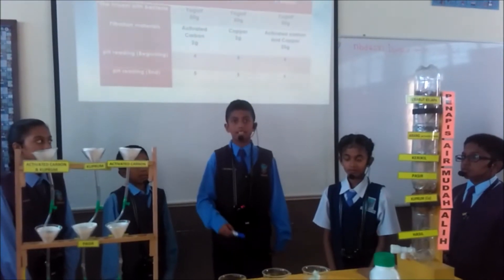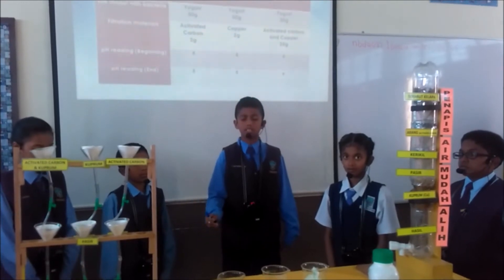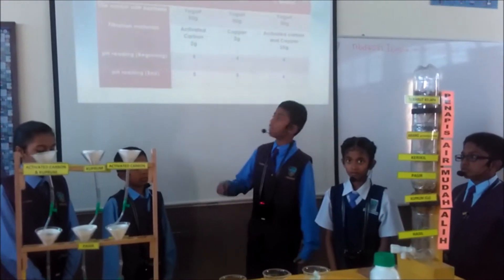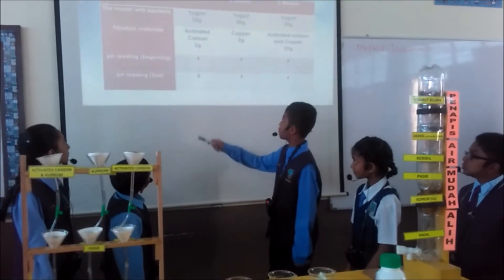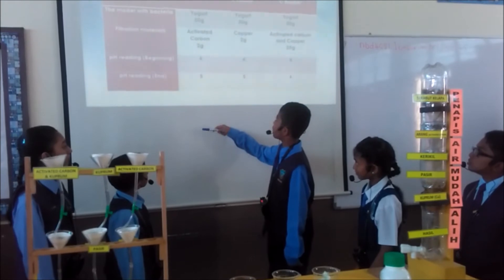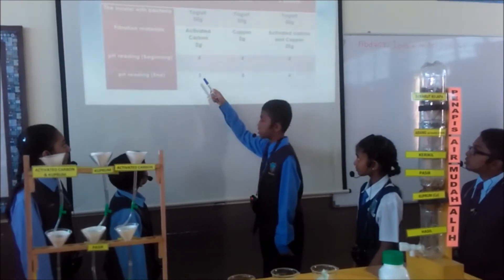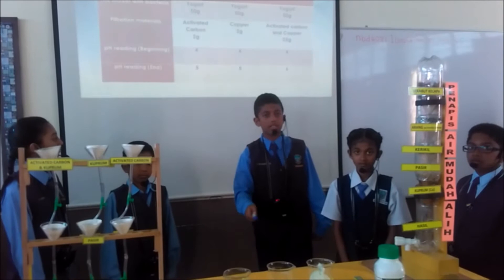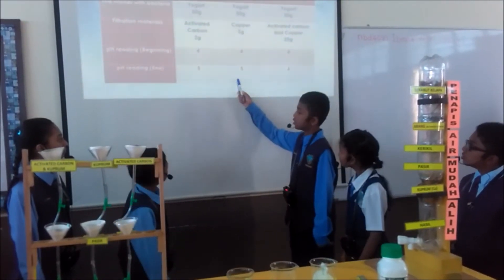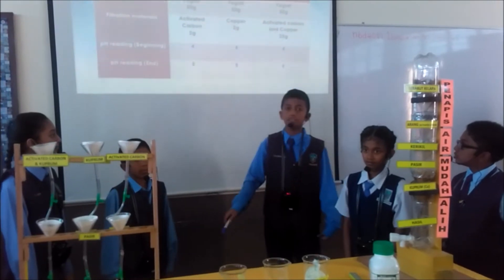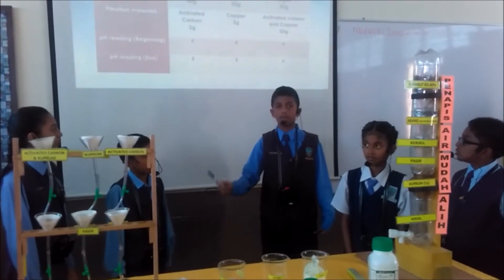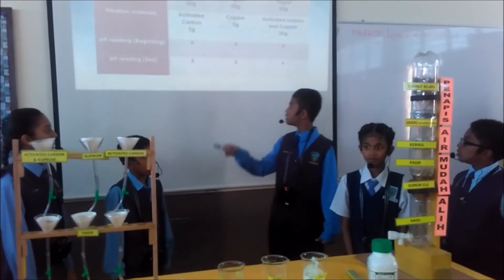We repeat this experiment a few times to get the average result. The average pH in Funnel A, which is filled with activated carbon, recorded zone 5 pH. The average pH in Funnel B, which is filled with copper, also recorded zone 5 pH. But the average pH in Funnel C, which is filled with activated carbon and copper, recorded zone 6 pH.